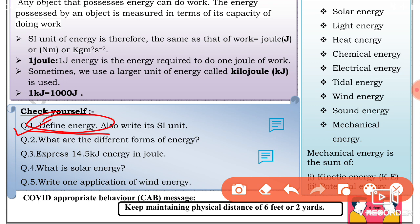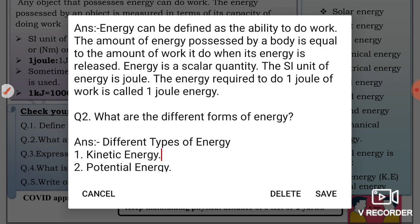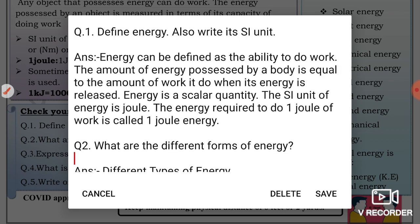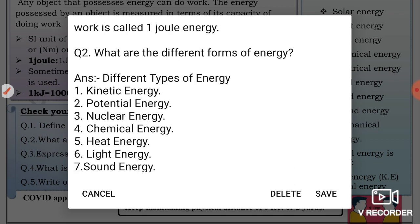First question: Define energy. Energy can be defined as the ability to do work. The amount of energy possessed by a body is equal to the amount of work it can do when its energy is released. Energy is a scalar quantity. The SI unit of energy is joule and the energy required to do one joule of work is called one joule energy.